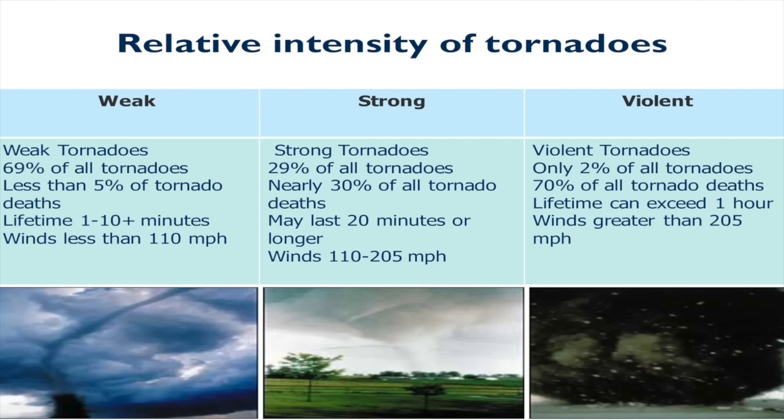This final category, the violent category, bears paying some attention to. The Joplin, Missouri tornado was in this category. Only 2% of all tornadoes are in this category. However, 70% of all tornado deaths are in this violent category. The lifetime can exceed an hour. They're very strong, don't dissipate quickly. Wind speeds are greater than 205 miles per hour, which means catastrophic damage, entire buildings destroyed.